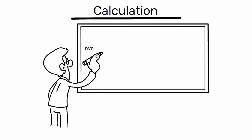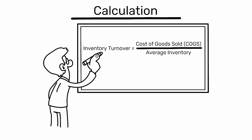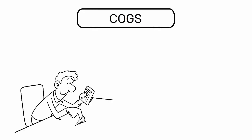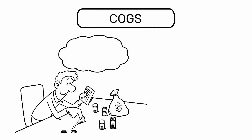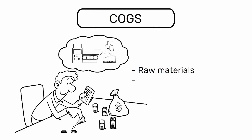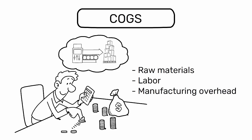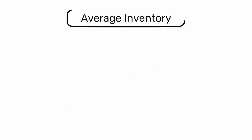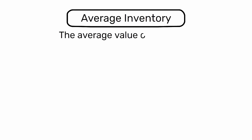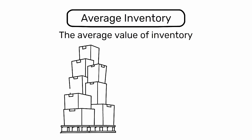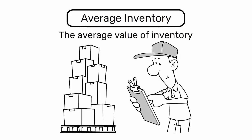Inventory turnover is calculated using the formula: inventory turnover equals cost of goods sold (COGS) divided by average inventory. COGS includes direct costs of producing sold goods, such as raw materials, labor, and manufacturing overhead. Average inventory is typically the average value of inventory at the beginning and end of the analyzed period.